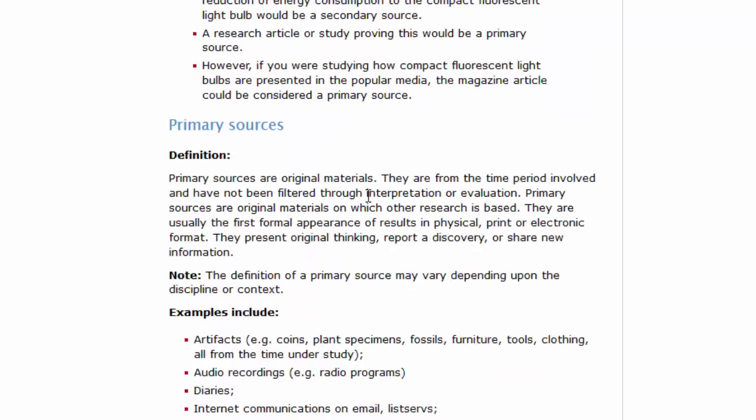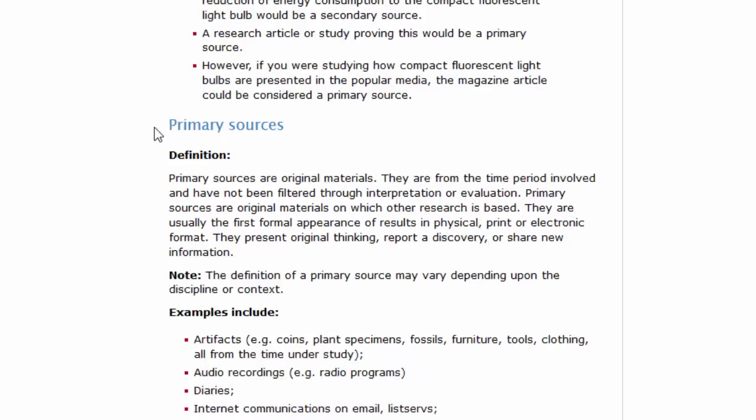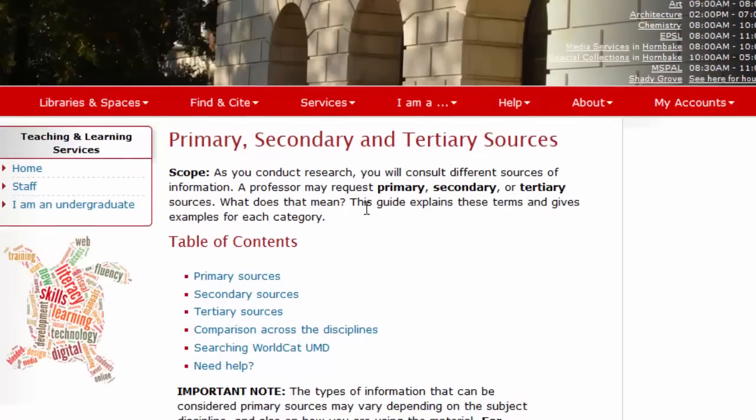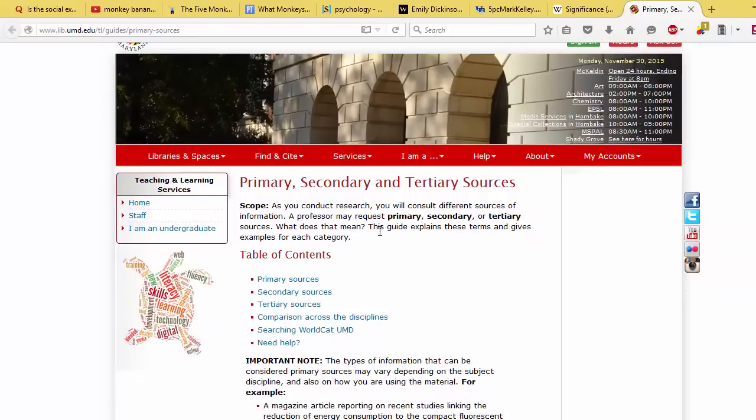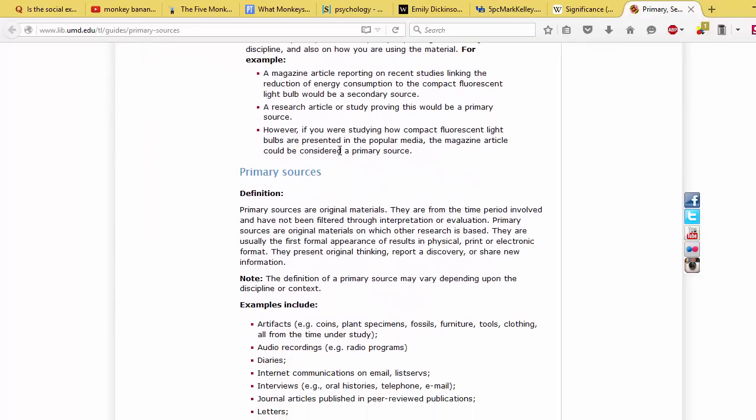But the point I'm trying to make is that genuine researchers will, wherever they can, try to get primary sources to support whatever claims they're making. And of course, this is presupposing that you're trying to find sources, evidence for the claims that you're making, which obviously you should be. So what I'm trying to say to you is if you're going to be making claims, especially about so-called science and scientific experiments, A, you should be able to provide sources for your claims, and B, where possible, you should be using primary sources.